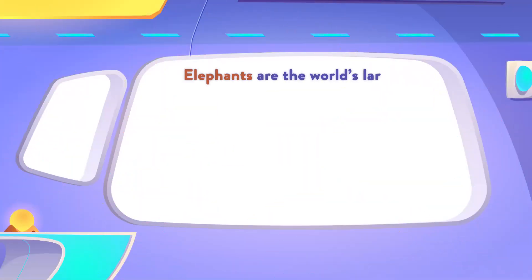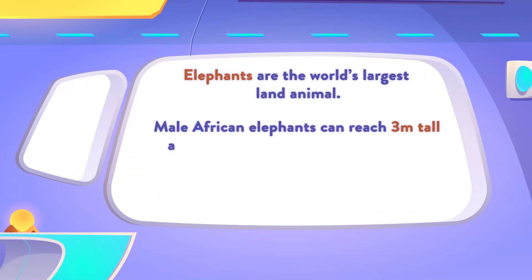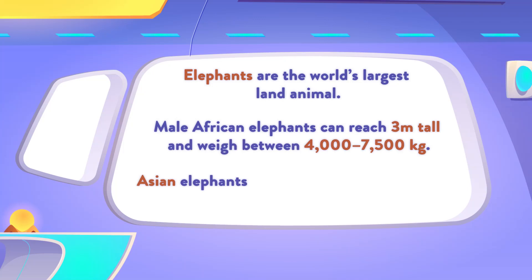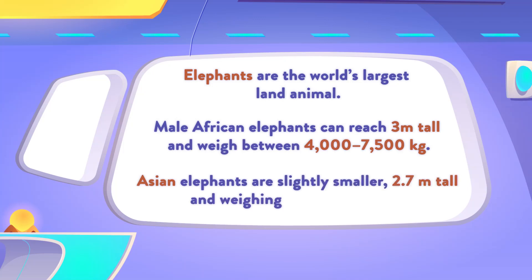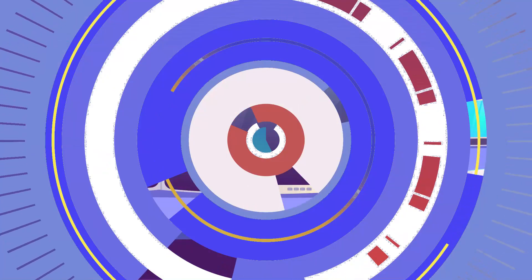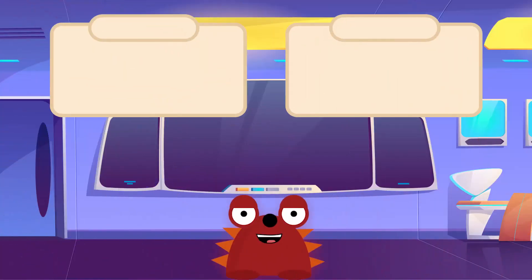Elephants are the world's largest land animal. Male African elephants can reach 3m tall and weigh between 4000–7500 kgs. Asian elephants are slightly smaller — 2.7m tall and weighing 3000–6000 kgs.